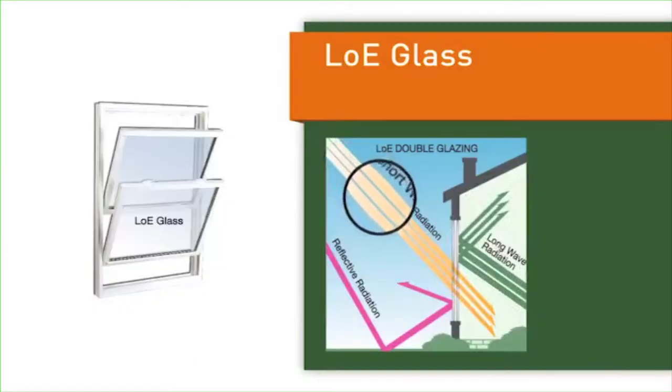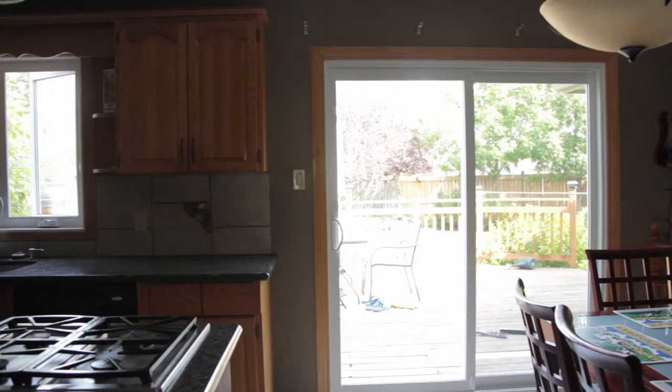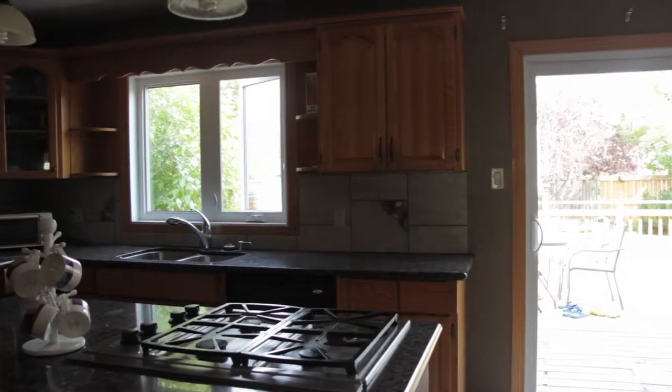UV rays from the sun, on the other hand, should be reflected back outside to protect the interior from early deterioration.